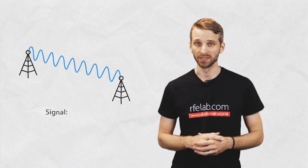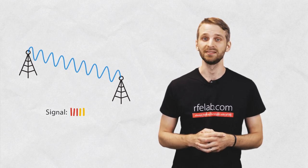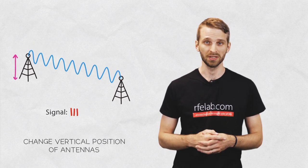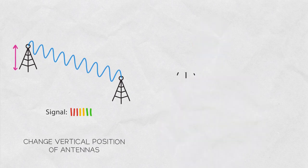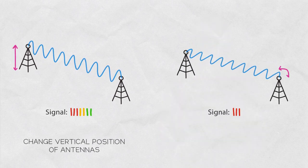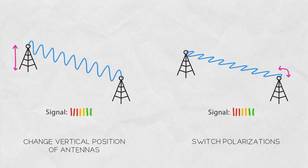In practice, you can see the influence of the reflections from the Fresnel zone as changing signal level with the changing position of the antennas. Or when you switch the polarizations, you can see a significant change in the signal level, even if the antennas have balanced chains.